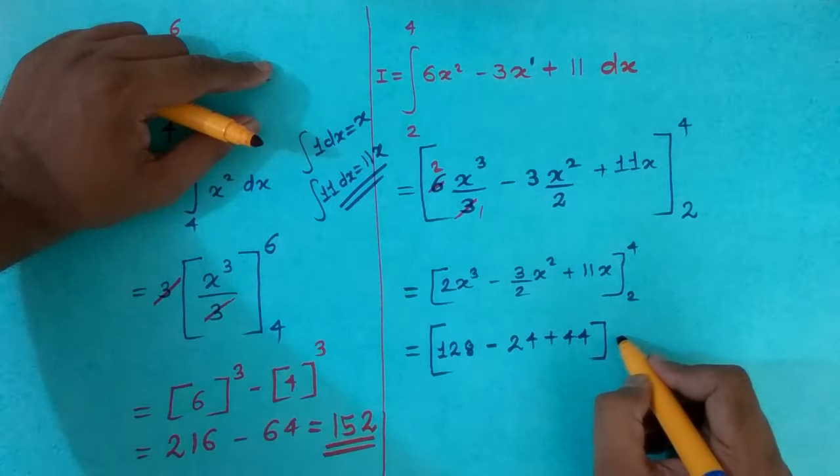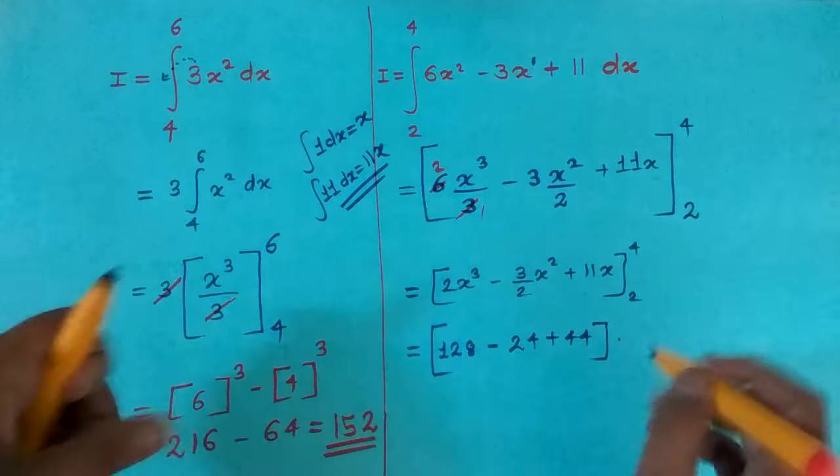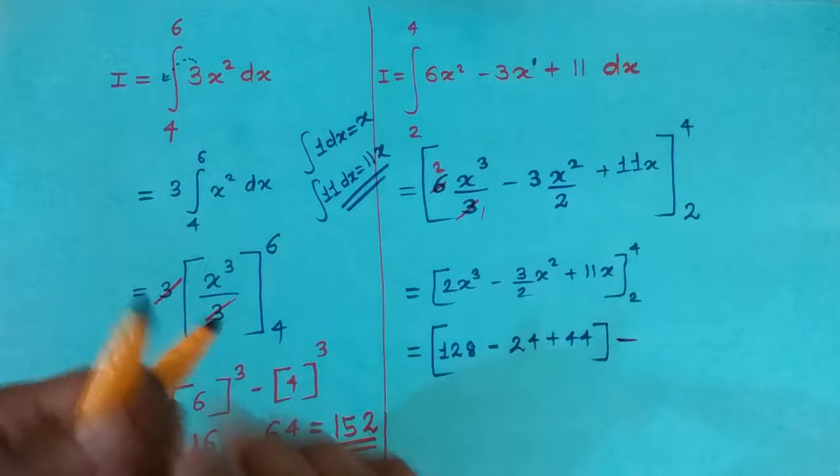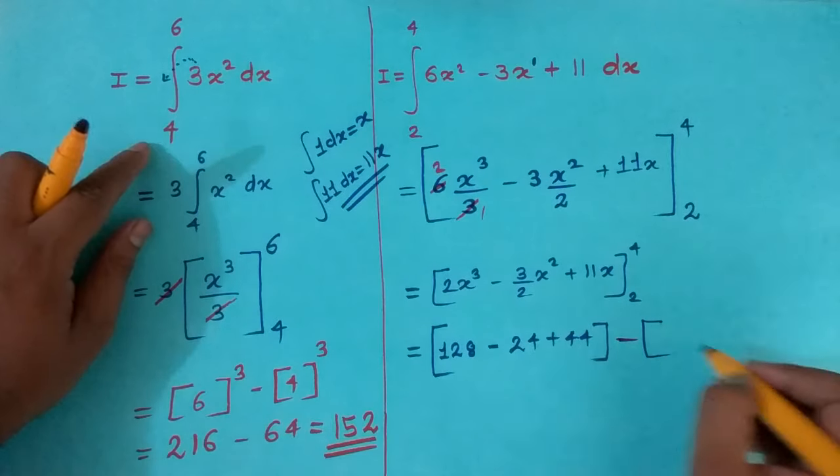This was for upper range minus minus what lower range and what is lower range?